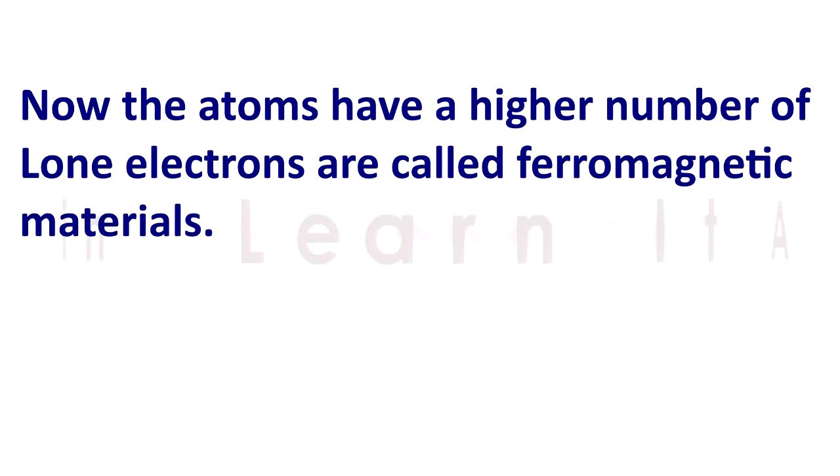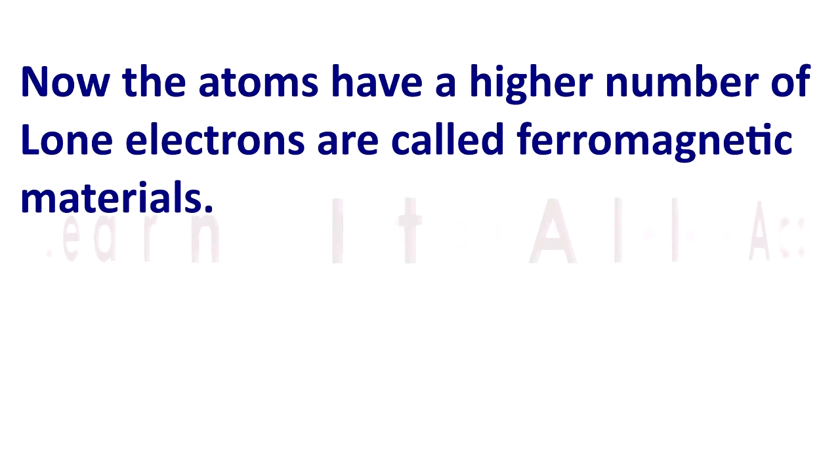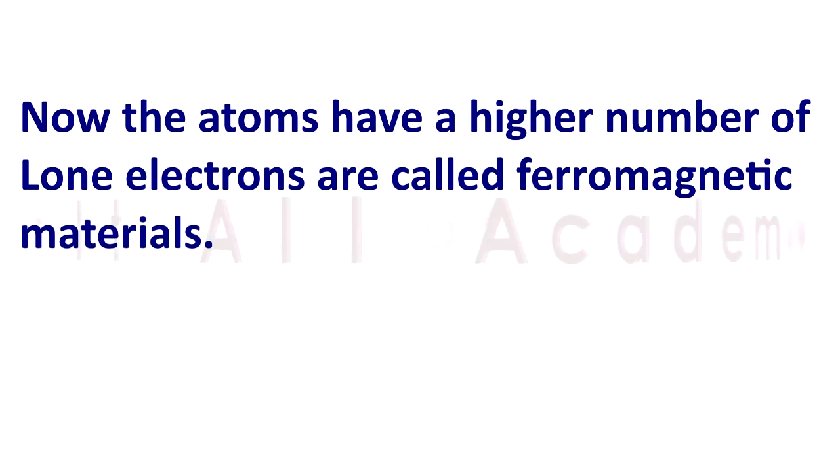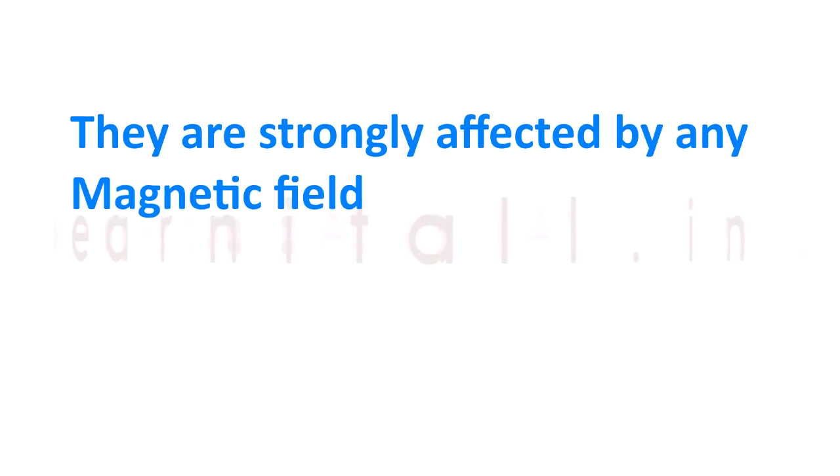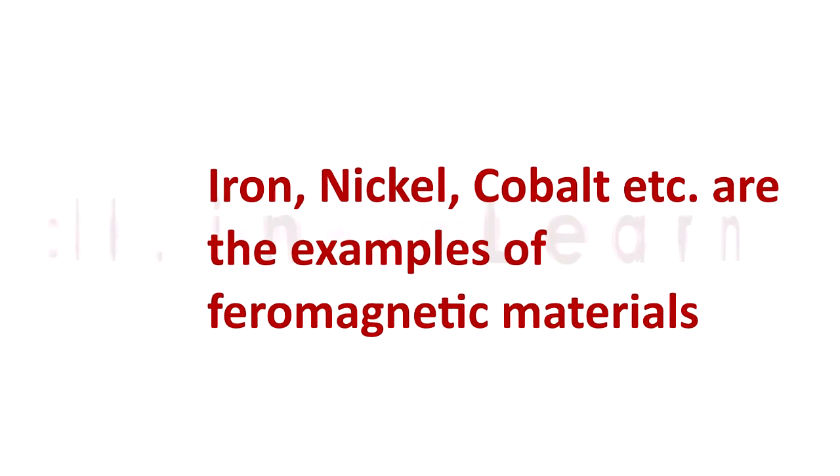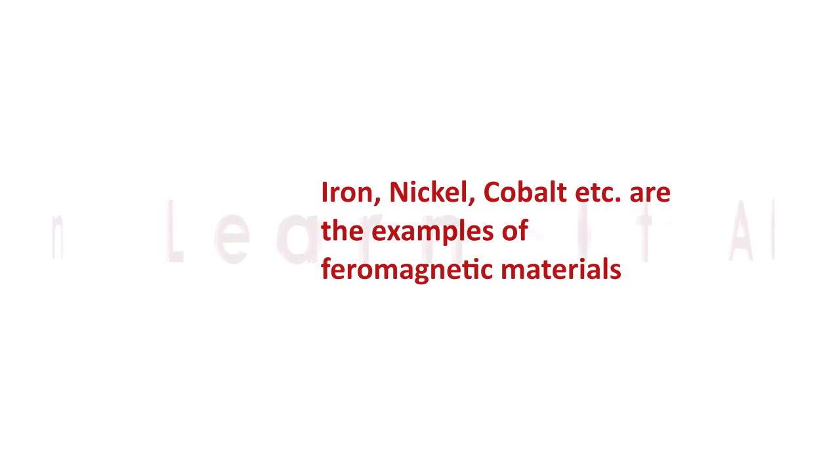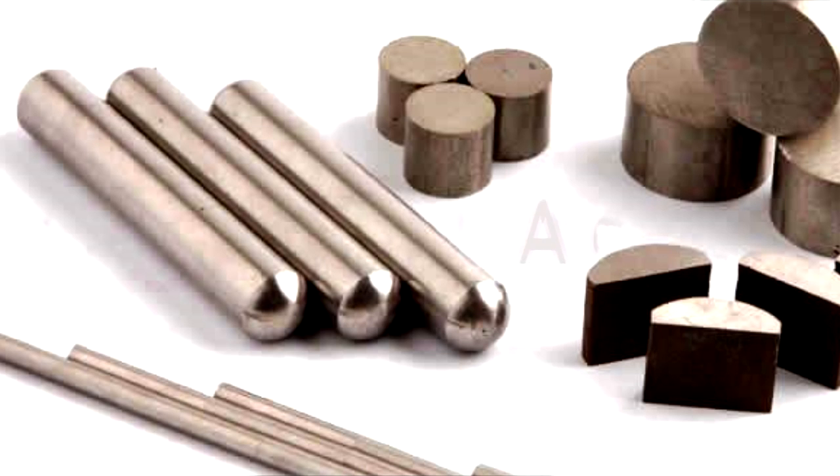Now the atoms having a higher number of lone electrons are called ferromagnetic materials. They are strongly affected by any magnetic field. Iron, nickel, cobalt, etc. are the examples of ferromagnetic materials.